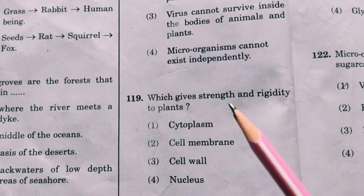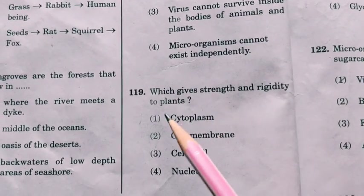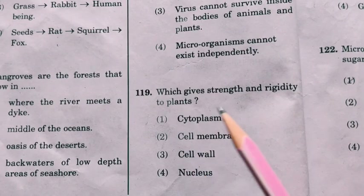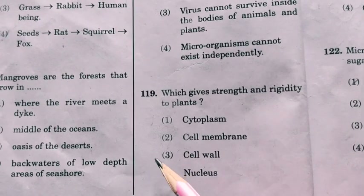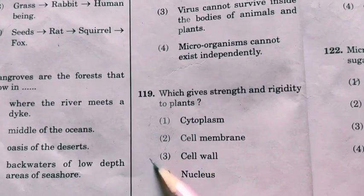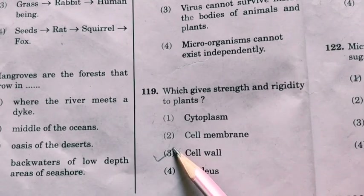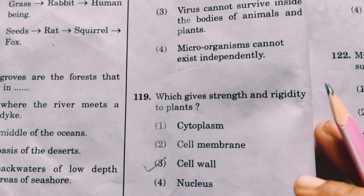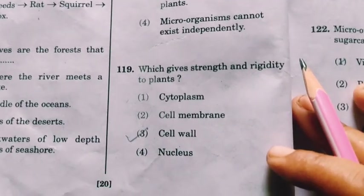Next question: which gives strength and rigidity to plants? We know that plant cells have a cell wall, which gives the strength and rigidity to the plant cell.